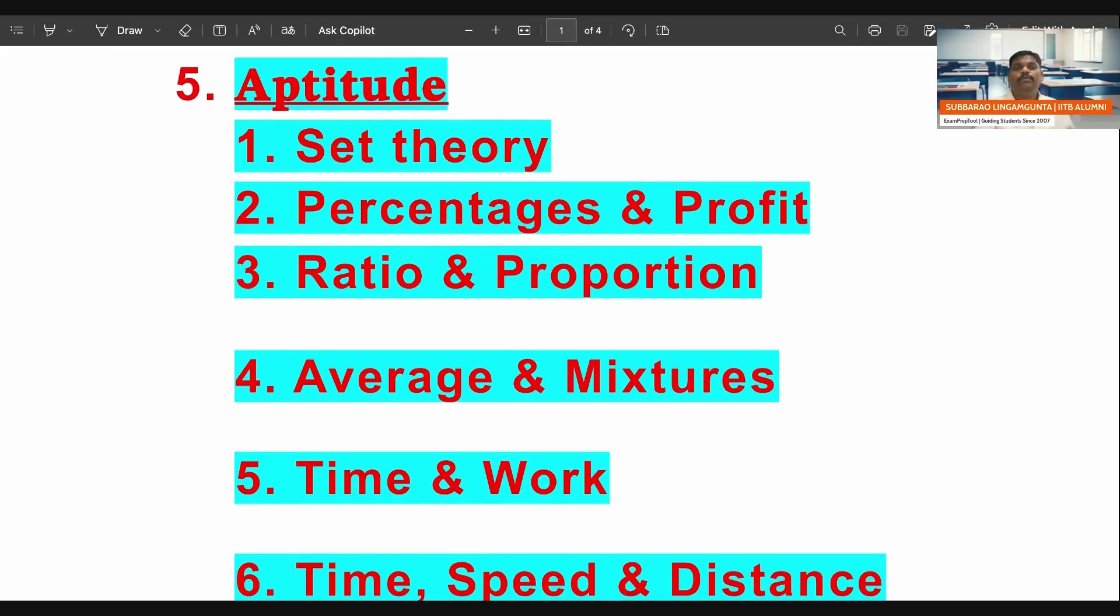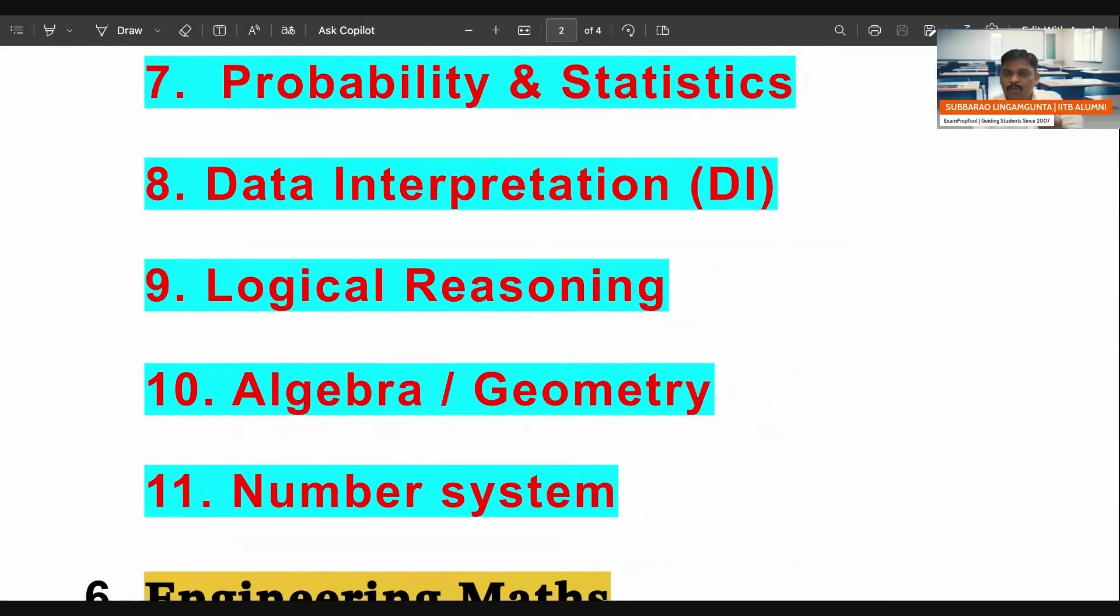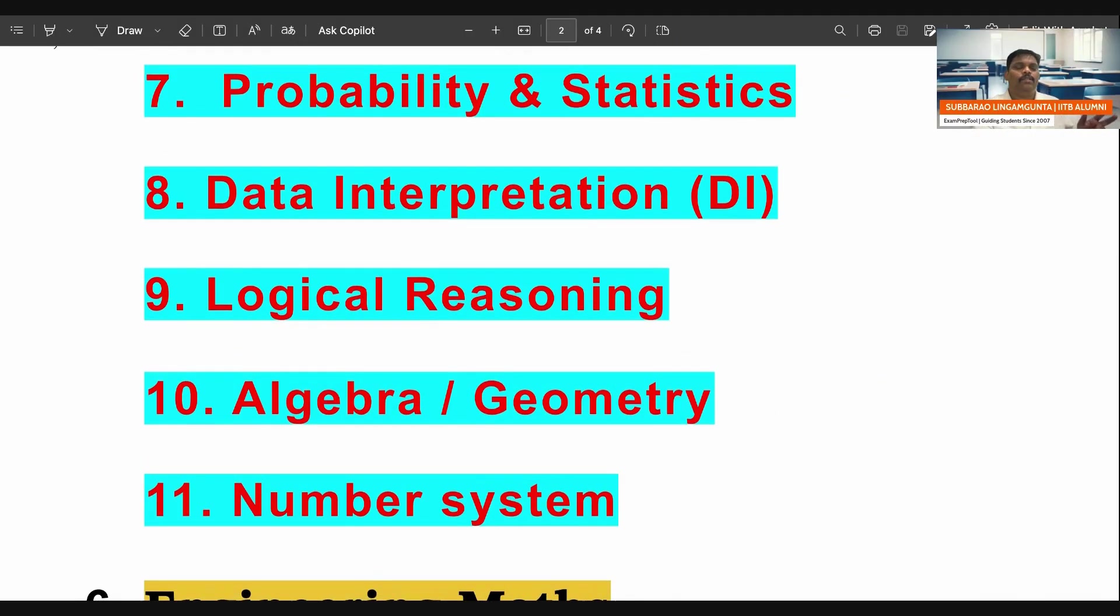Next subject is aptitude. In GATE examination, favorite thing is set theory. Set theory, guarantee one question is coming, every year coming. Next one is percentages and profit, ratio and proportion, averages and mixtures, time and work, time speed and distance, probability statistics, data interpretation, logical reasoning, algebra and geometry and number system. These are the things which are important for aptitude. I cannot say which are important in aptitude, anything they can ask. But by seeing the previous years, these are the important things. You may say that many topics I said, but remember in aptitude actually there is no minimization possible. You have to read all. But we done lot of checking. These are the important things. First you study. If you still have time, you can study remaining things also. Please do at least a few problems for every topic.